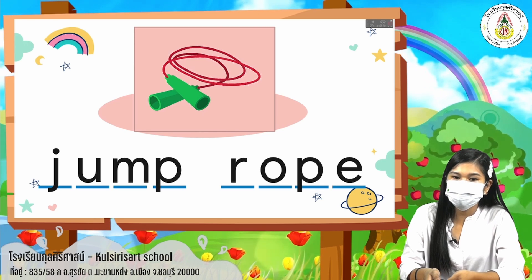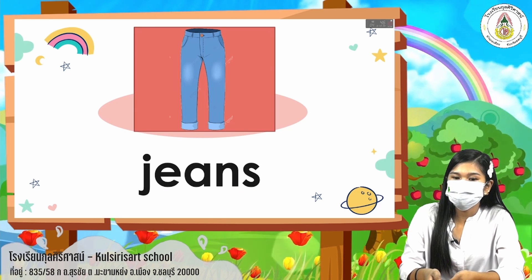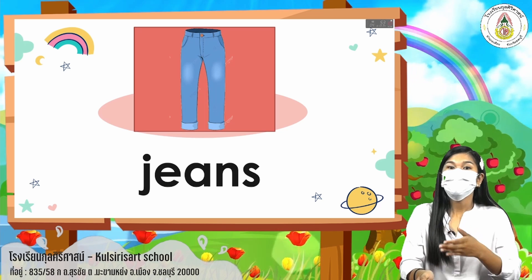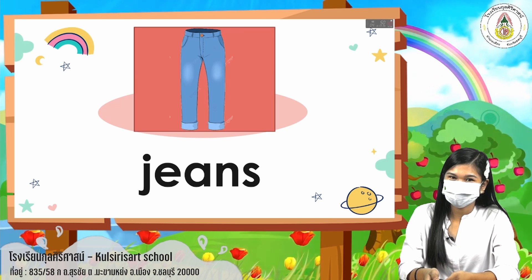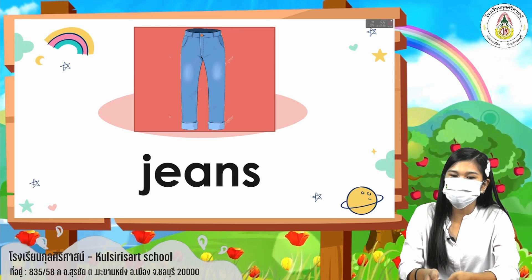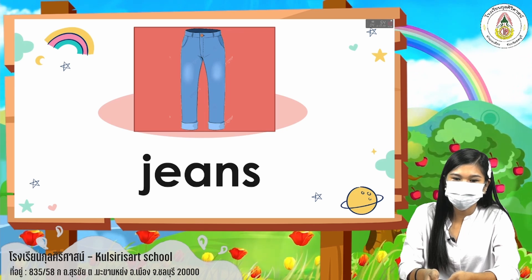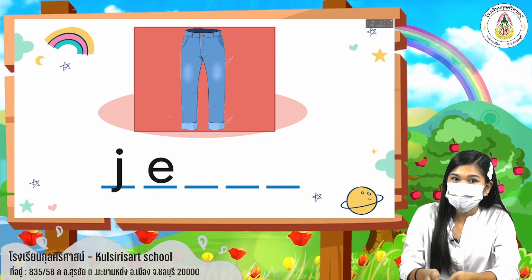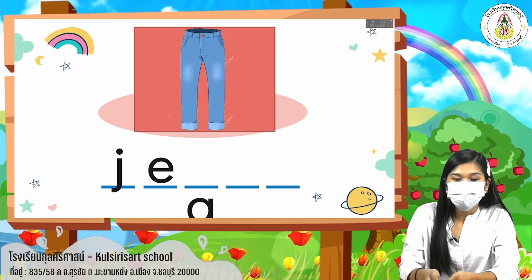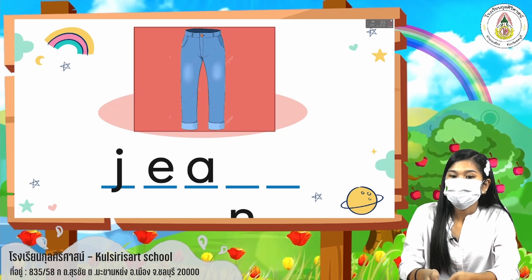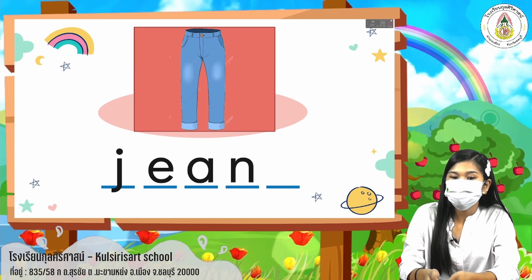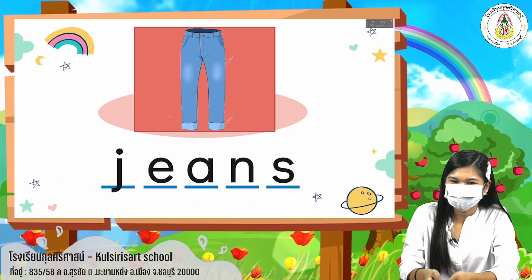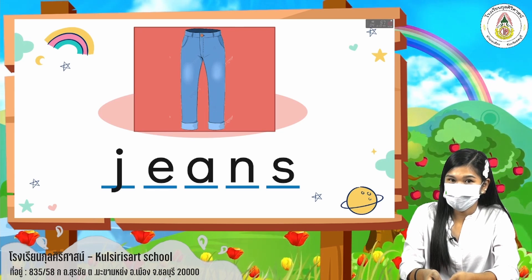Next, we have here — we call it jeans. Say it with teacher: jeans. Now let's spell it out. Letter J, E, A, N, S. Jeans.